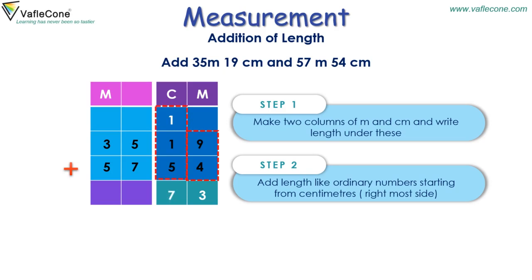Now in the meter column, 5 plus 7 is equal to 12, and then 1 plus 3 plus 5 is equal to 9. So the answer is 92 meters and 73 cm.